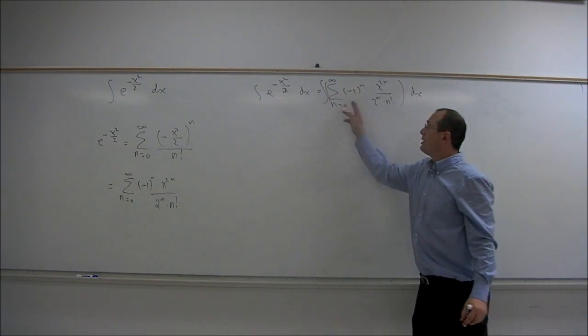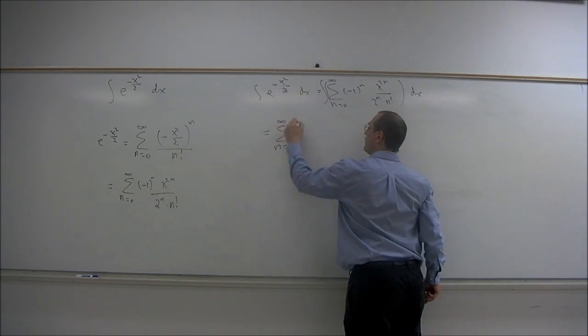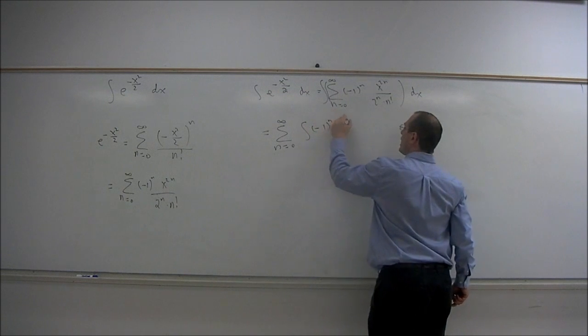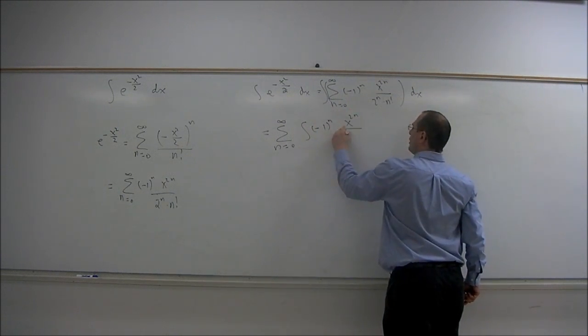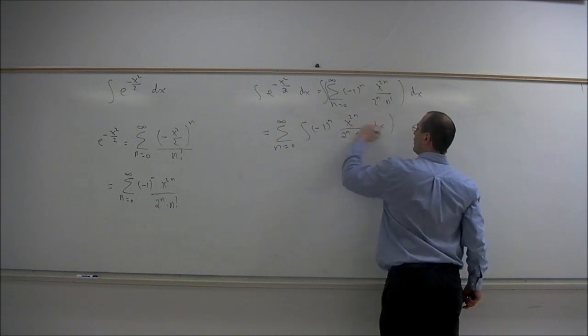We can integrate the series term by term, so this becomes the summation n equals zero to infinity of the integral of (-1)^n · x^(2n) / (2^n · n!) dx.